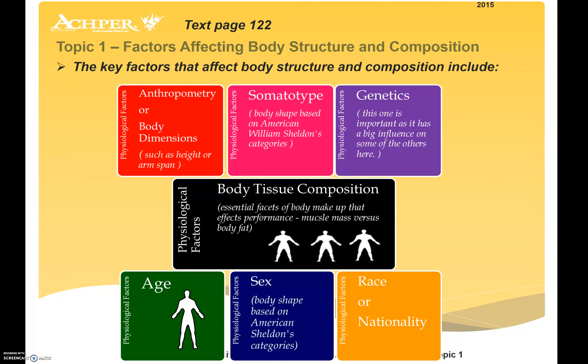Having covered the training principles and methods, and yesterday you would have looked at some exam style questions to reflect on in groups, we're moving on to the physiological factors that affect performance. We have a diagram here looking at anthropology of body dimensions, somatotypes, genetics, body tissue composition, age, sex, and race and nationality. Those are the key factors that affect body structure and composition, and then we relate that to performance.